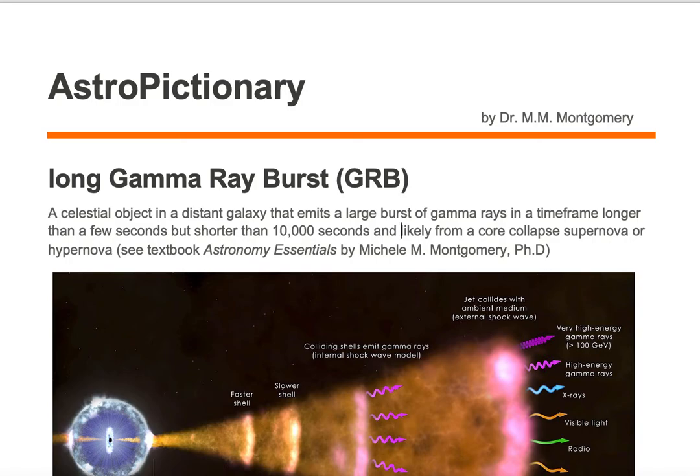A long gamma-ray burst is a celestial object in a distant galaxy that emits a large burst of gamma rays in a time frame longer than a few seconds but shorter than 10,000 seconds and likely from a core collapsed supernova or hypernova.